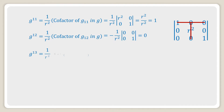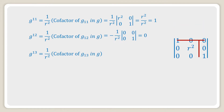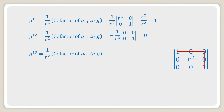Similarly, g^13 is equal to one over r² into the cofactor of g_13 in g, which gives a determinant of 0, 0; 0, 0, which is equal to zero.